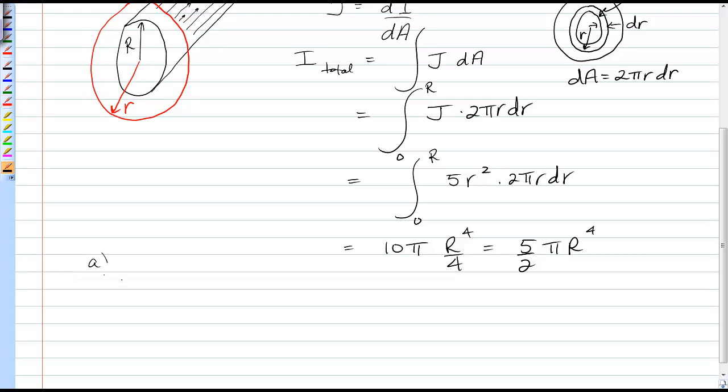So for case A, we'll have r greater than R, and the magnetic field would be μ₀ i_in over 2πr. That's Ampere's Law.